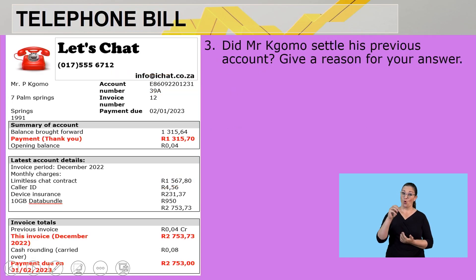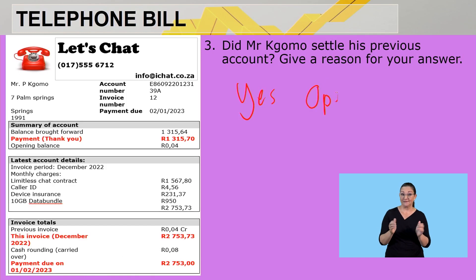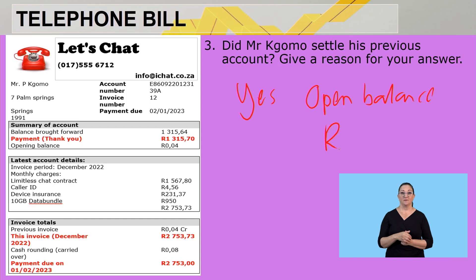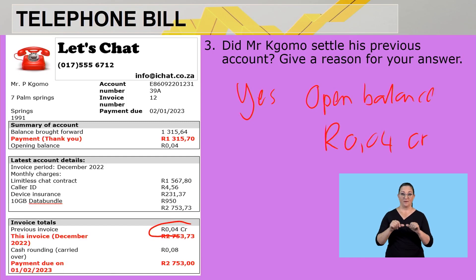Did Mr. Como settle his previous account? Give a reason for your answer. Yes, he did. There's an opening balance of 4 cents and it is a credit. It also shows you that with the previous invoice he had settled.